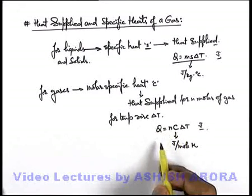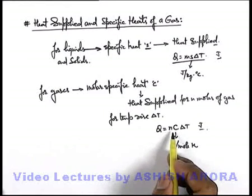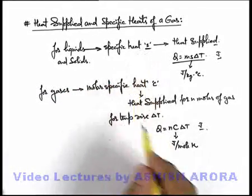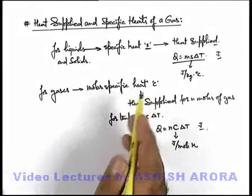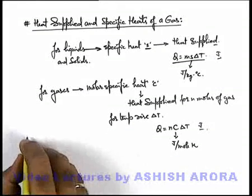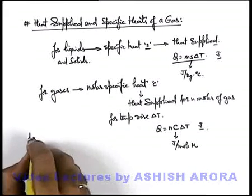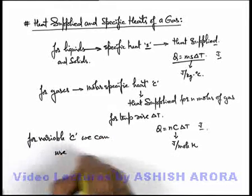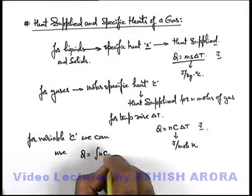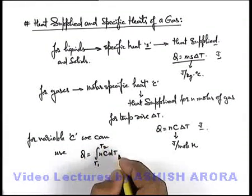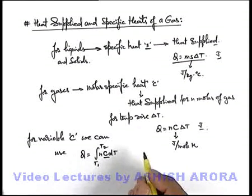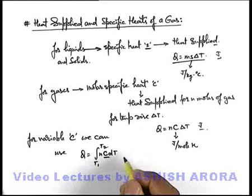You need to be careful: for solids and liquids, specific heat is a constant for a given range of temperature. But in the case of gases, C need not be constant — it may be a function of pressure, volume, or temperature. For a variable value of C, we use the total heat supplied as the integral of nC dT for temperature variation from T₁ to T₂. This expression is used whenever C is variable, and there are many cases where C changes with temperature, pressure, or volume.